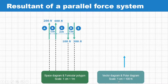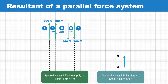The vector diagram scale chosen is 1 centimeter equal to 100 Newton. AB represents 200 Newton, so 200 divided by 100 gives 2 centimeters. BC represents 400 Newton, so that vector is 4 centimeters.